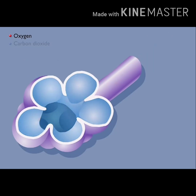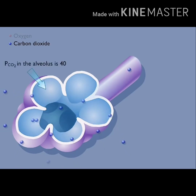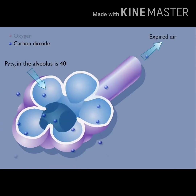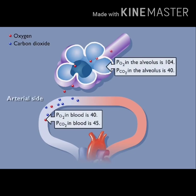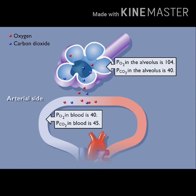Carbon dioxide that enters the alveoli from the blood causes the carbon dioxide concentration in the air of the alveoli to be 40 millimeters of mercury. Carbon dioxide is continually removed from the alveoli as air is expired. Blood coming from the heart at the arterial ends of the pulmonary capillaries has a partial pressure of oxygen (PO2) of 40 and a PCO2 of 45. Therefore, oxygen diffuses from the air in the alveoli into the blood, and carbon dioxide diffuses from the blood into the alveoli, because of these differences in partial pressures.